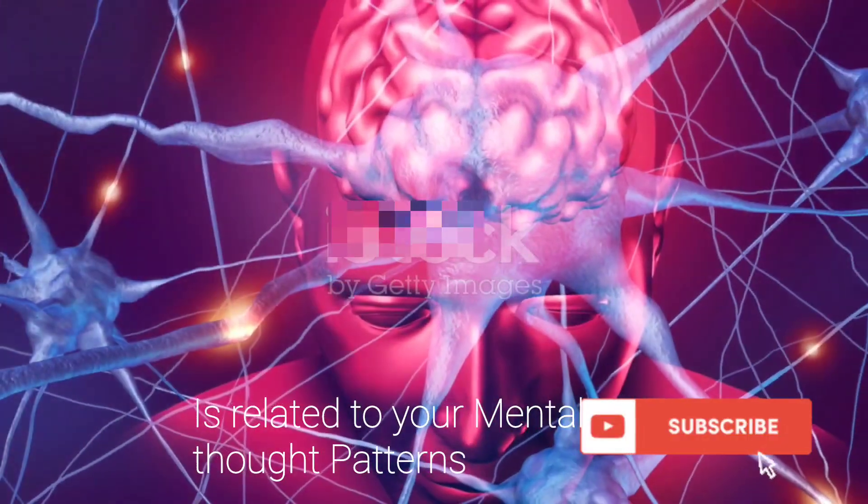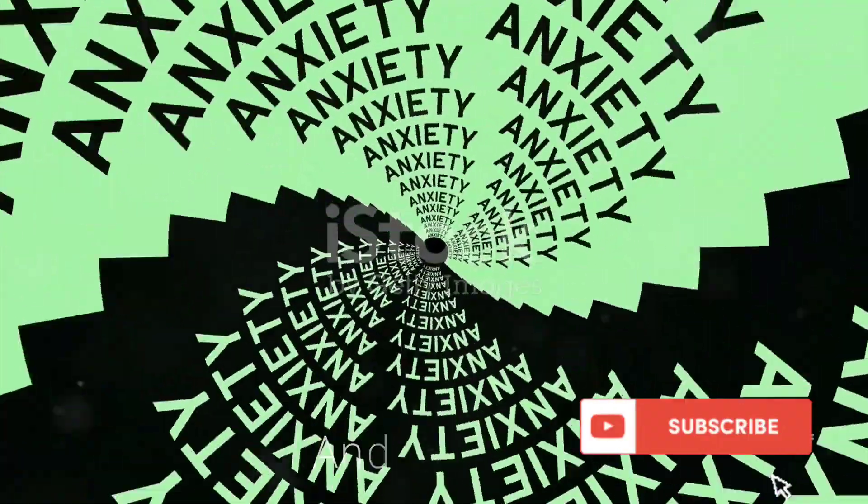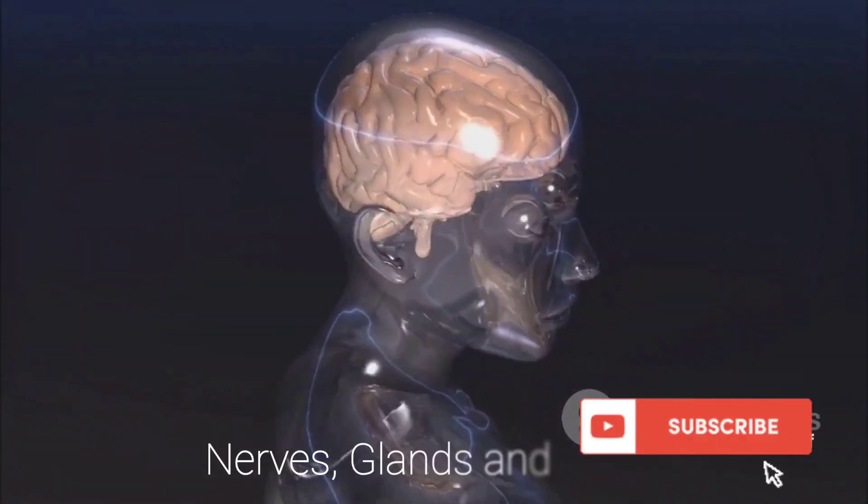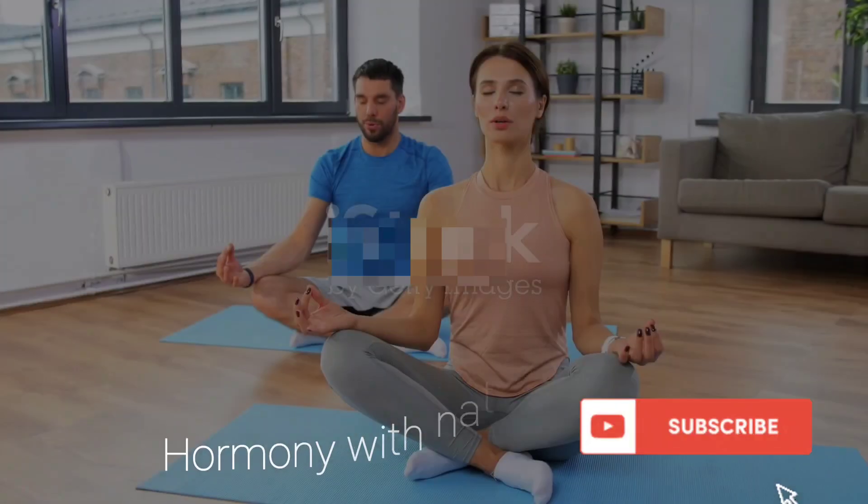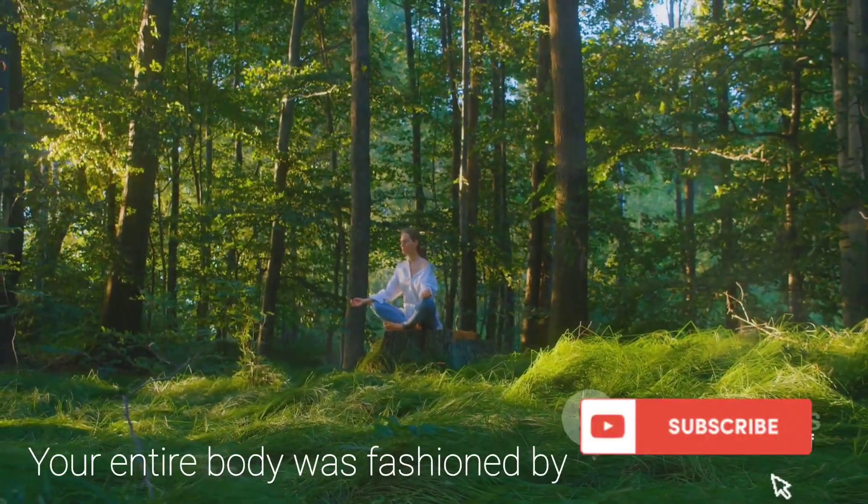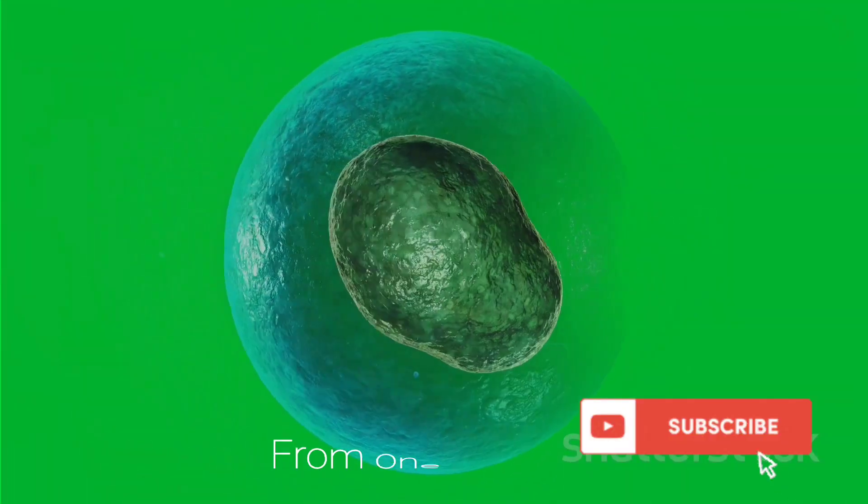Thoughts of jealousy, fear, worry, and anxiety tear down and destroy your nerves, glands, and your body's ability to rebuild itself in perfect harmony with nature. Your entire body was fashioned by your subconscious mind from one cell and the perfect blueprint stored in your DNA.